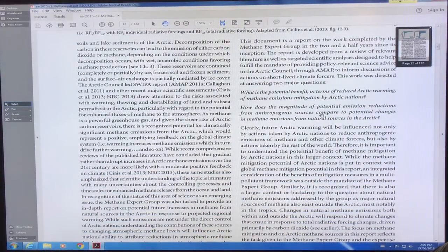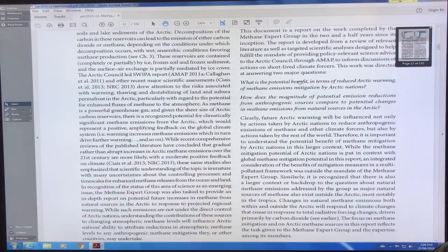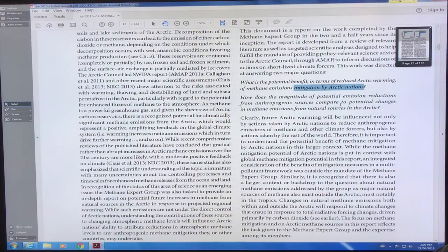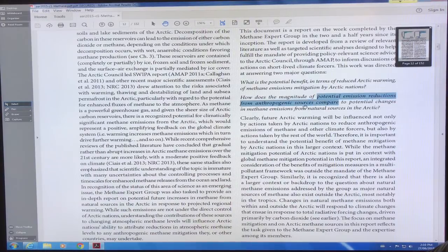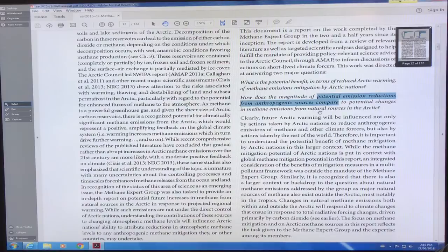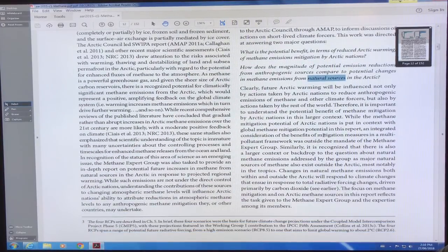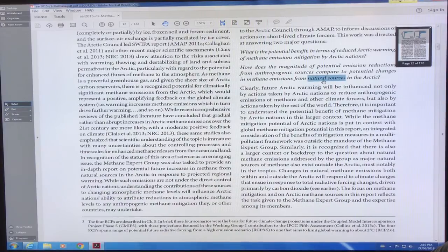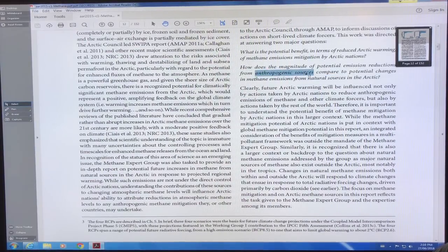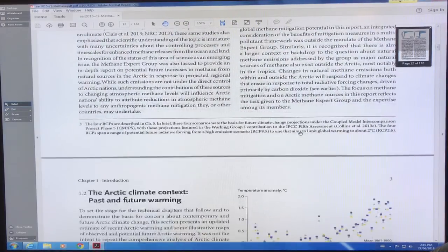So some of the questions here are, what are the benefit in terms of reducing Arctic warming of methane emissions mitigation by Arctic nations? This is focusing on the nations surrounding the Arctic. And how do you compare the anthropogenic source emissions to potential changes in methane emissions from natural sources? As we change, as the climate changes, as we get a much faster warming Arctic, which is happening, if emissions start skyrocketing from the Arctic, how will they compare to anthropogenic? In the worst case, these become so large that they overwhelm anthropogenic emissions and they rocket us up to a much warmer world.